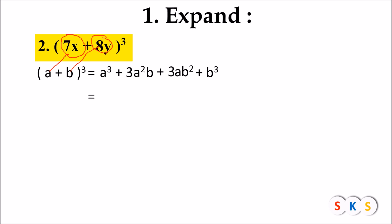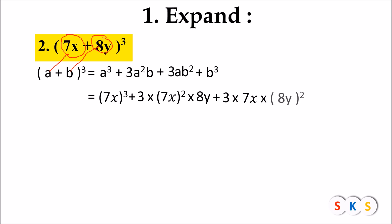Substituting a = 7x and b = 8y into the formula, we get: a³ = (7x)³, plus 3 × (7x)² × 8y, plus 3 × 7x × (8y)², plus (8y)³.